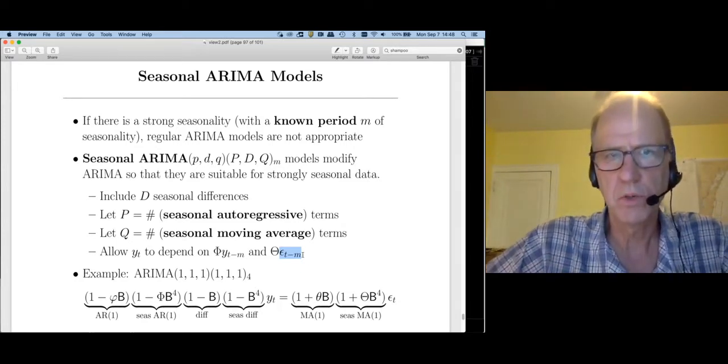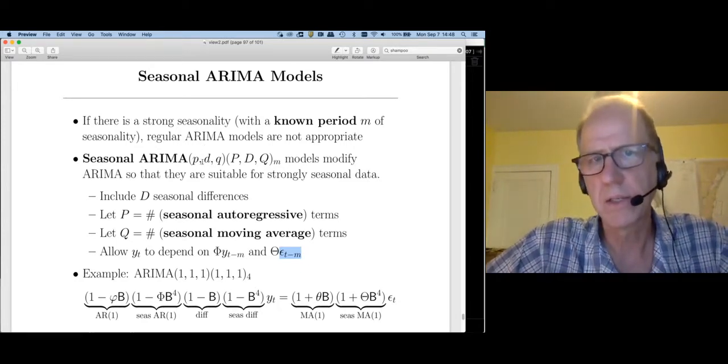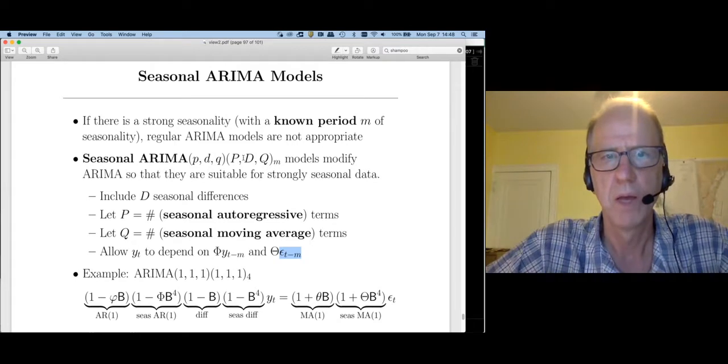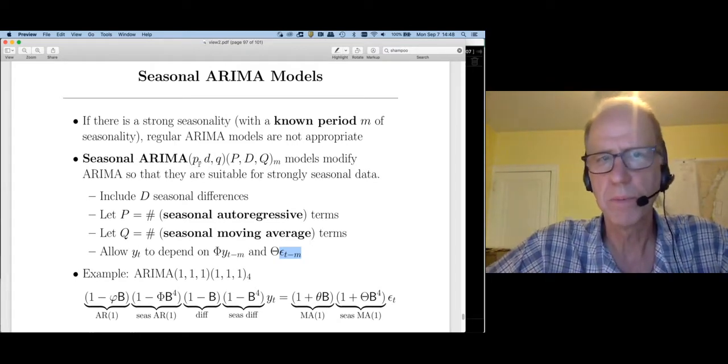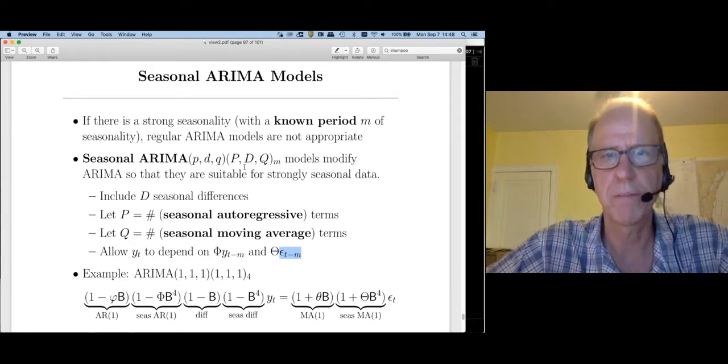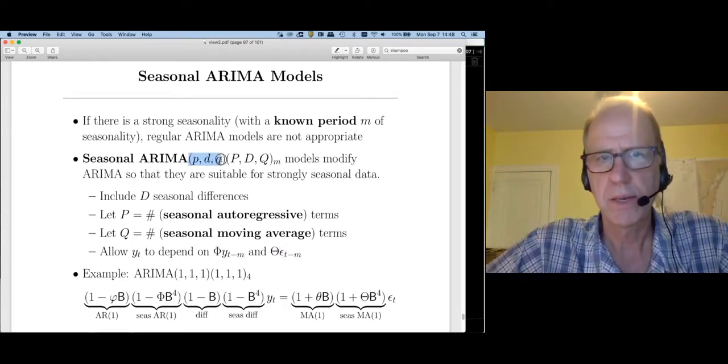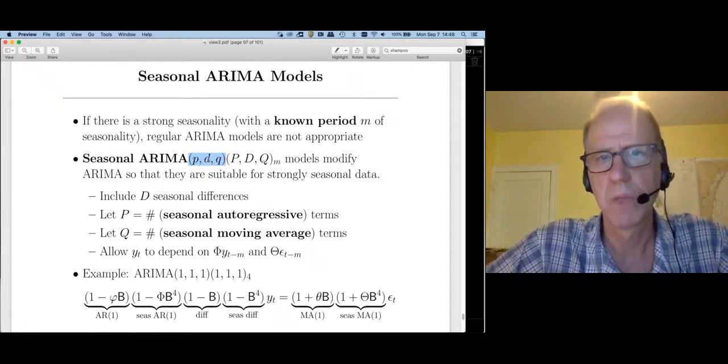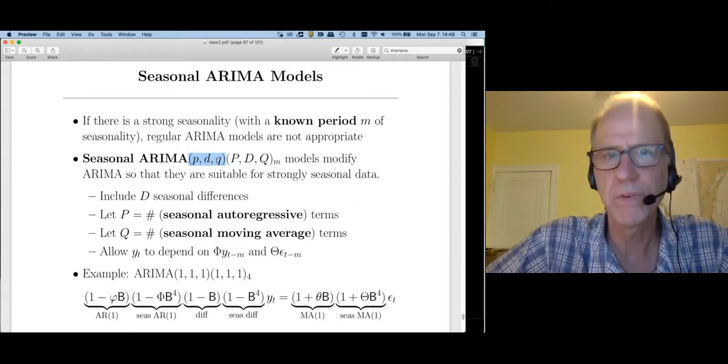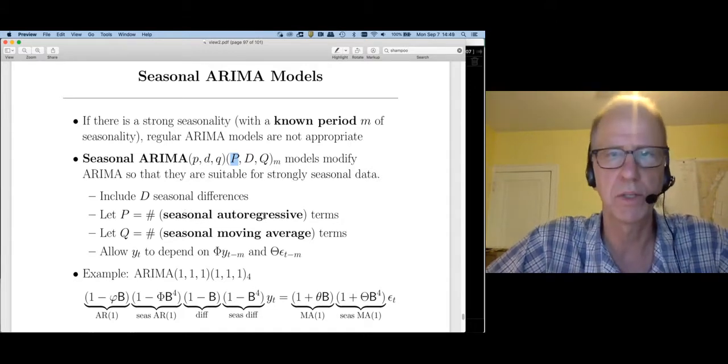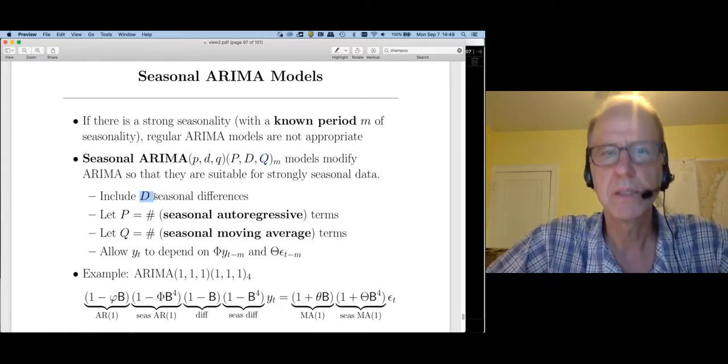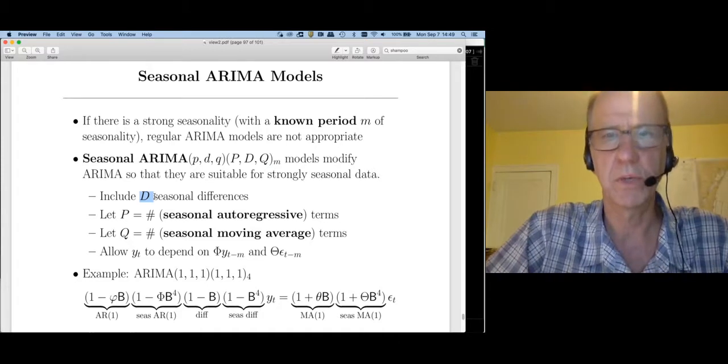The notation that we're going to use is to use lowercase letters for normal ARIMA, uppercase letters for the seasonal part. We'll write out a seasonal ARIMA model followed by two triples to specify the model. This would say we're going to have a normal ARIMA model with P autoregressive terms, D differences, and Q moving average terms. Then big P is going to be the number of seasonal autoregressive terms, big Q will be the number of seasonal moving average terms, and big D will be the number of seasonal differences that we include.